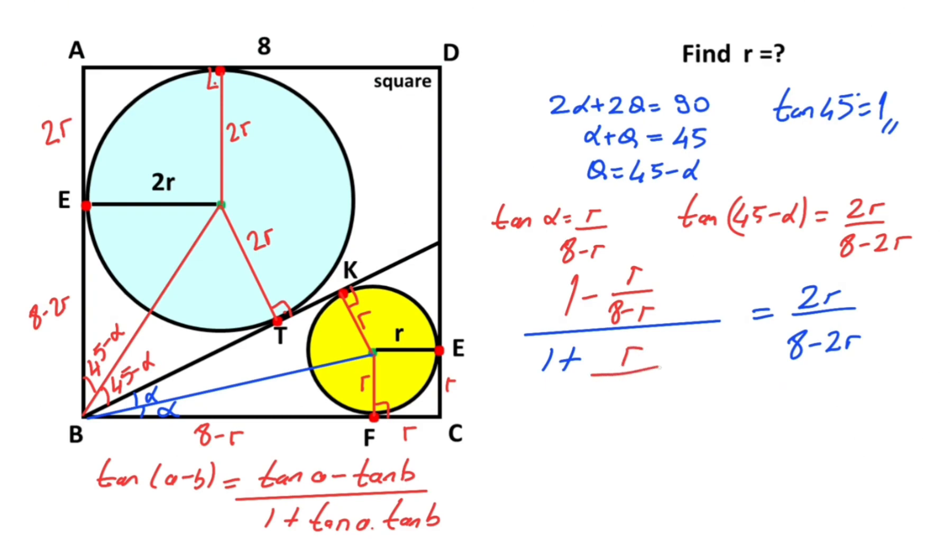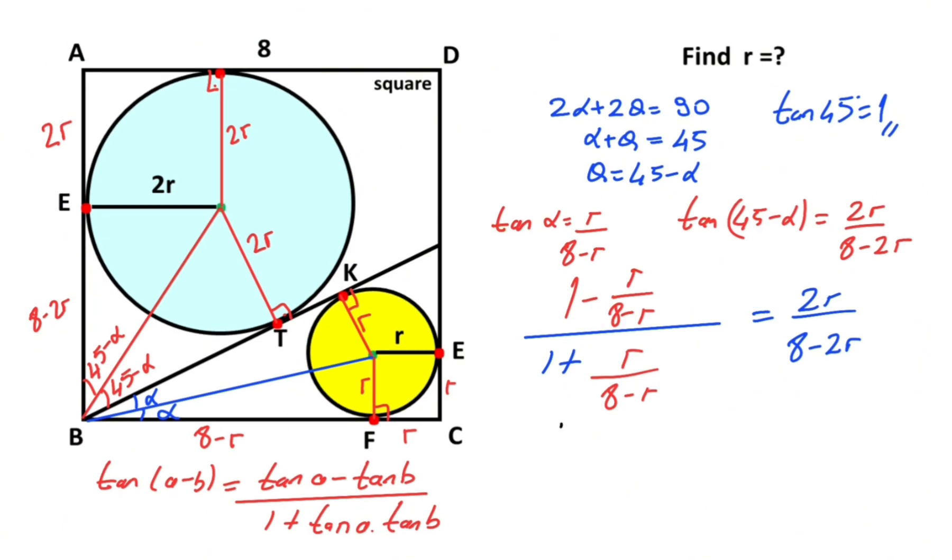Tangent alpha equals r over 8 minus r. Eight minus r over 8 minus r equals 2r over 8 minus r plus r.